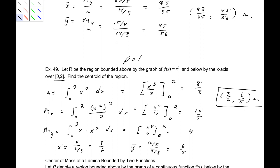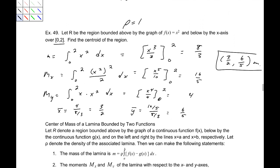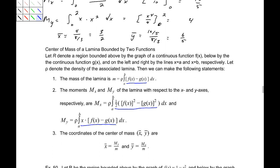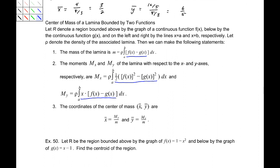Just as we extended area integrals to area between curves, we now extend the lamina formulas to regions bounded by two functions. The mass becomes the integral of f(x) − g(x). My is x·[f(x) − g(x)], and Mx uses [f(x)]² − [g(x)]² all over 2. The centroid coordinates are found the same way as before.